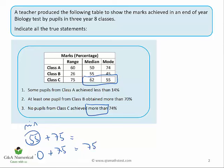A minimum of zero plus the range of 75 gives us a maximum of 75. Evaluating the statement — no pupils from class C achieve more than 74% — we can see that someone could have got 75%, so that is a false statement.